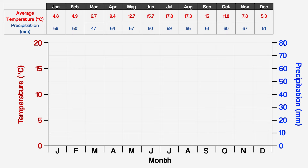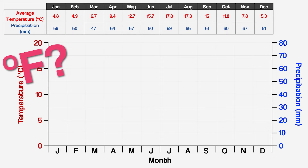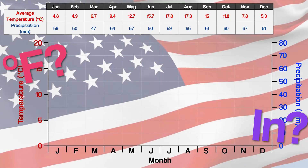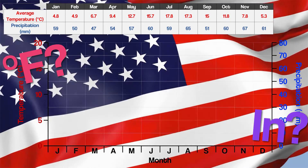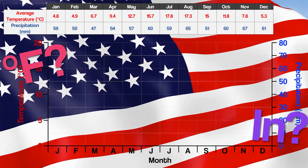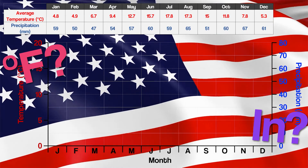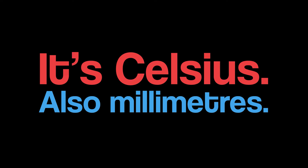At this point we should probably tell you that you might also see climate graphs that show temperature in Fahrenheit and precipitation in inches. Yes America, we're talking to you. We're not saying that one unit is better than the other — oh wait, yes we are. Celsius is better. Stop being weird and use Celsius already, America.